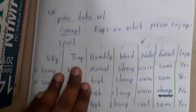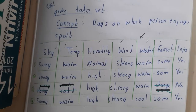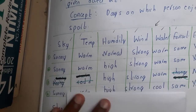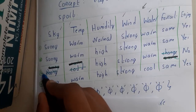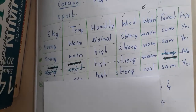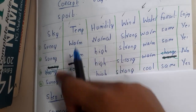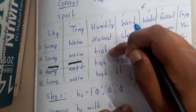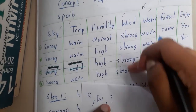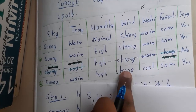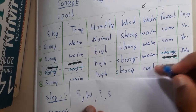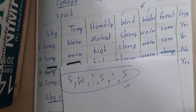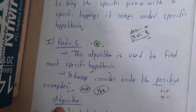Here is a quick trick for the examination. Write down only the 'yes' rows — strike off the 'no' row. Then compare only those rows column by column: if every positive row has the same value (e.g., all 'sunny'), write that value; if values differ (e.g., 'normal' vs 'high'), write '?'. That gives the final result directly: (sunny, warm, ?, strong, ?, same).